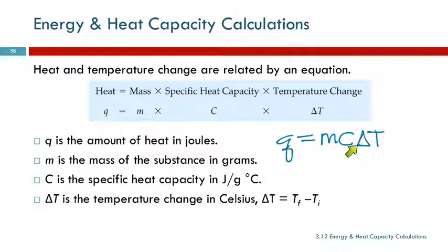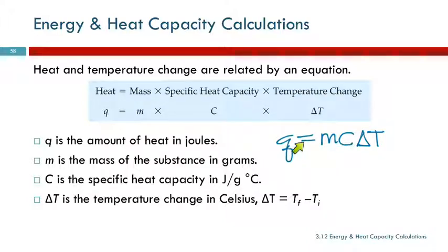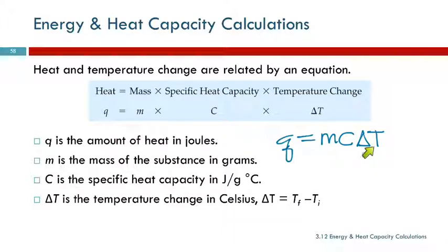This triangle is the Greek letter delta. In science, we use that to symbolize change — the change in. It kind of looks like an A, so sometimes students say Q equals MCAT. That's one of those tests you have to take, right? MCAT — to help them remember it.